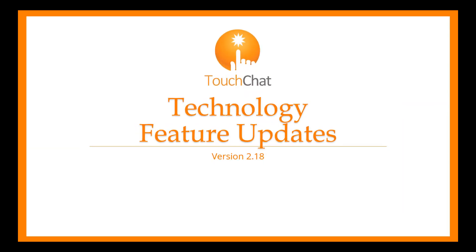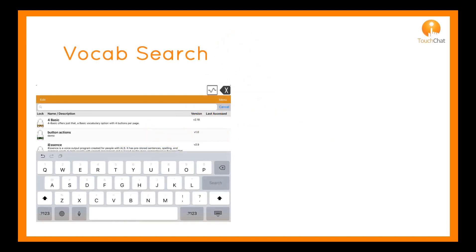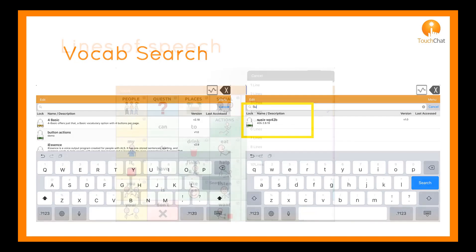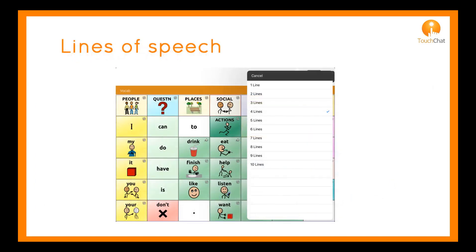Update 2.18 brings new features to TouchChat. A search bar has been added to allow you to search for vocabulary by name. As you begin to type, the list will narrow to your option. The number of lines of speech in the speech display bar is no longer limited to 3; you now have the option to select from 1 to 10 lines of speech.